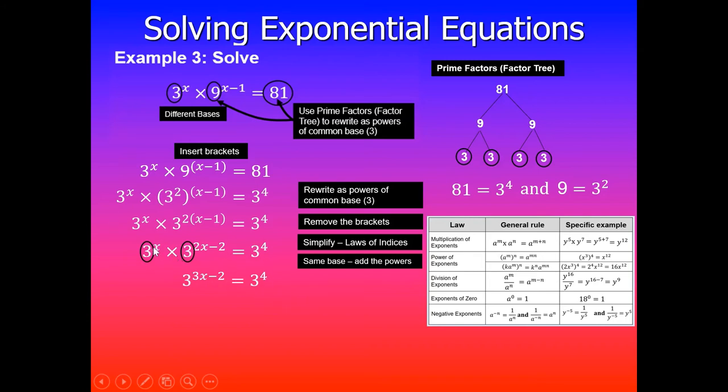Remember, base is the same, we add the powers like mentioned in this rule here. So this simplifies to 3^(3x-2) = 3^4. What this means is 3^(3x-2) is the same as 3^4, and what that means is 3x - 2 equals 4. So we drop the bases.